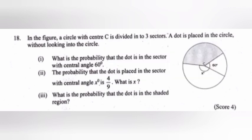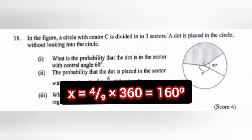2. The probability that the dot is placed in the sector with central angle x degree is 4 by 9. What is x? Answer: x equal 4 by 9 into 360 equal 160 degree.